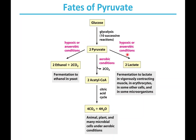When there isn't oxygen around, the fates of pyruvate differ depending on the organism. In animals, under anaerobic or hypoxic conditions, pyruvate is converted into lactate or lactic acid. In microorganisms like yeast, a similar process occurs — pyruvate gets converted into ethanol, and that's what's known as fermentation. The process of pyruvate going to lactate in humans can also be called fermentation.